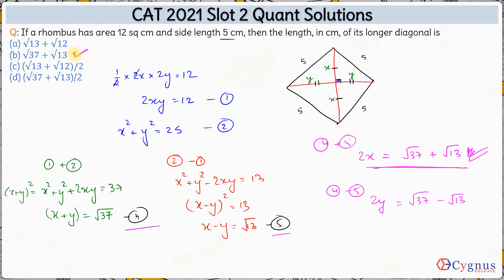Hence the longer diagonal which is 2x is equal to root of 37 plus root of 13 which is option b over here. The correct answer is option b here. So that is it for this question. Thank you.